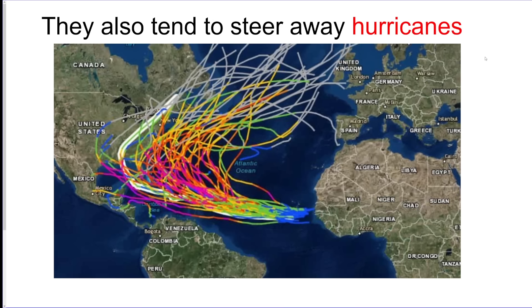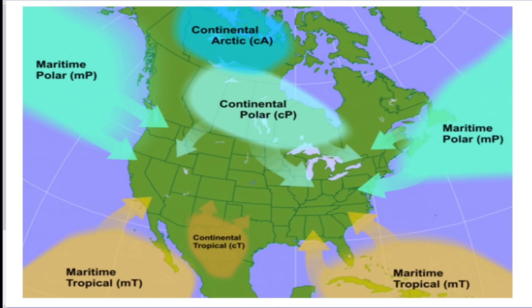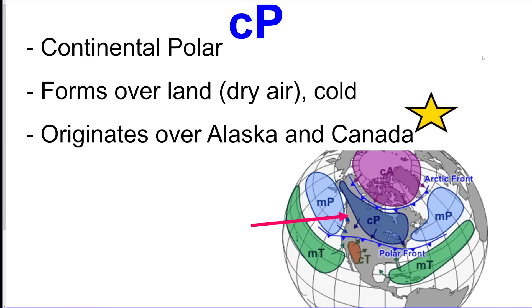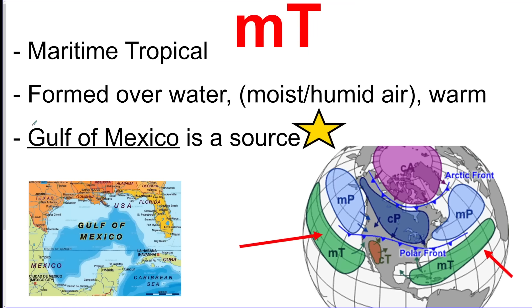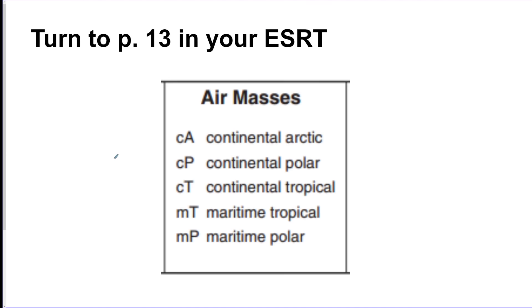You need to know how to use page 14 of the reference table. The southwesterly winds are between 30 and 60 degrees latitude — that's where New York is. For air masses: maritime means over water, polar means cold, tropical means warm, and continental means over land. cP comes from Canada and mT comes from the Gulf of Mexico — the reference table won't tell you those locations, so you have to remember them.